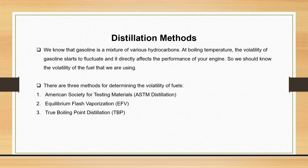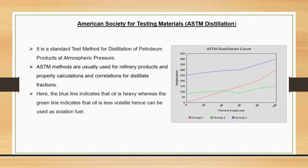The first method is ASTM distillation, abbreviated for American Society for Testing Materials. The second one is Equilibrium Flash Vaporization, and the third one is True Boiling Point distillation, abbreviated as TBP. ASTM distillation is a standard test method used for distillation of petroleum products at atmospheric pressure.